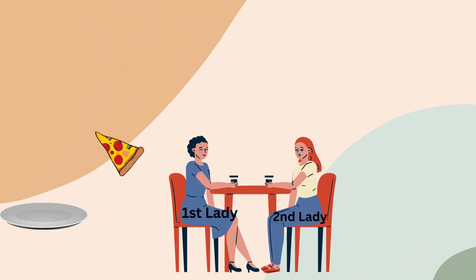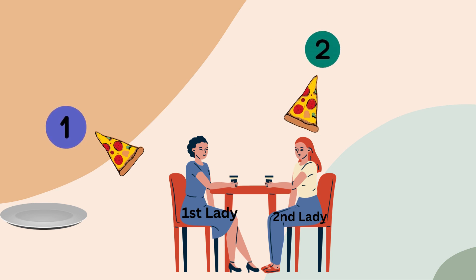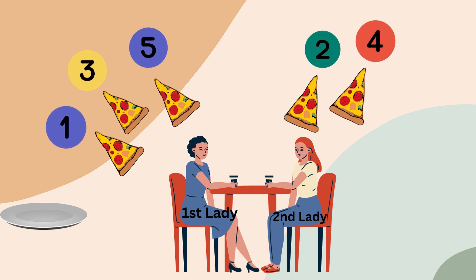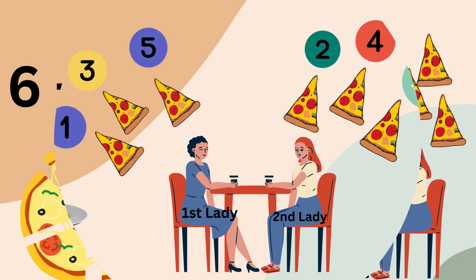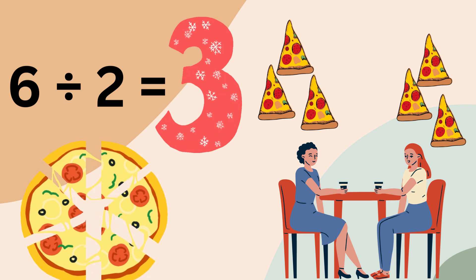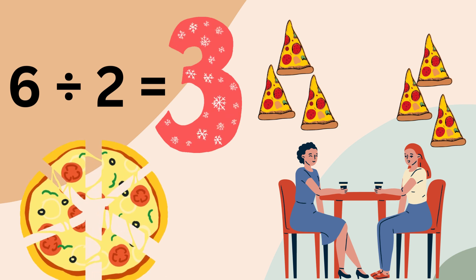First slice to first lady. Second slice to second lady. Third slice to first lady, fourth slice to second lady. Fifth slice to first lady and sixth slice to second lady. Now the tray is empty. Six divided by two is three.